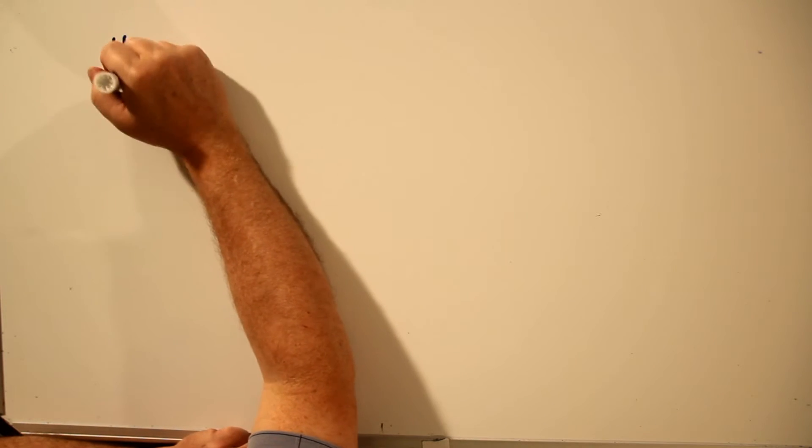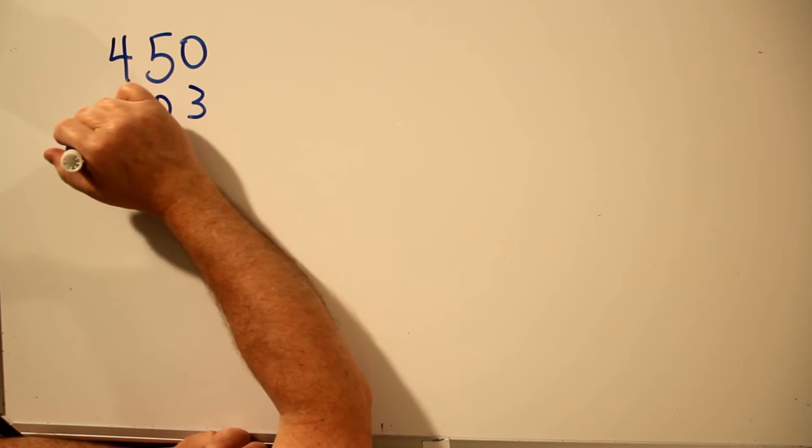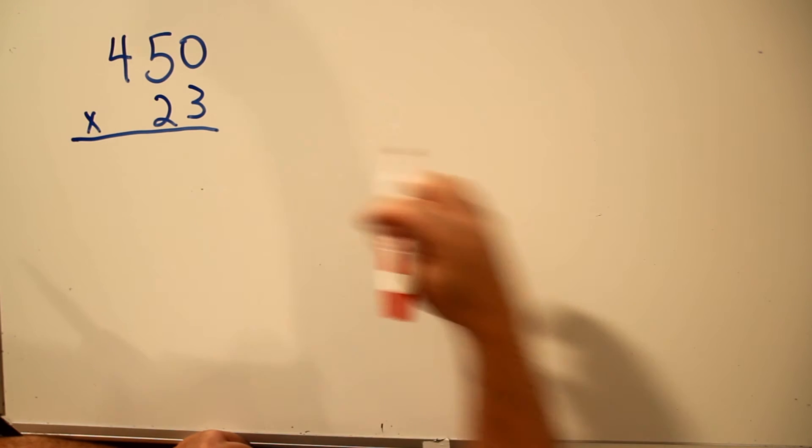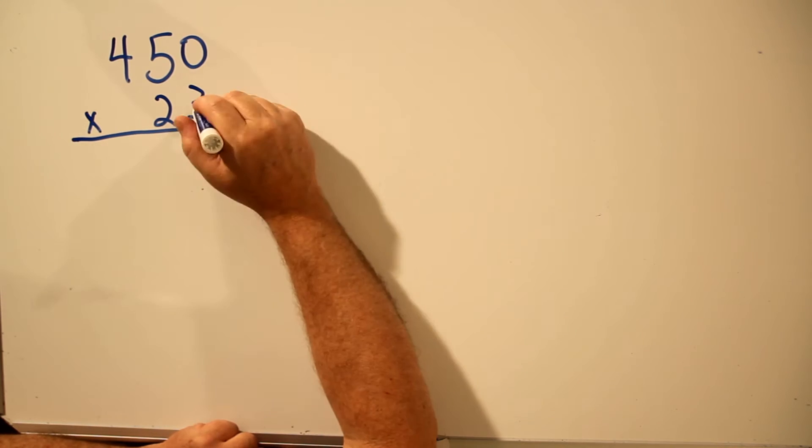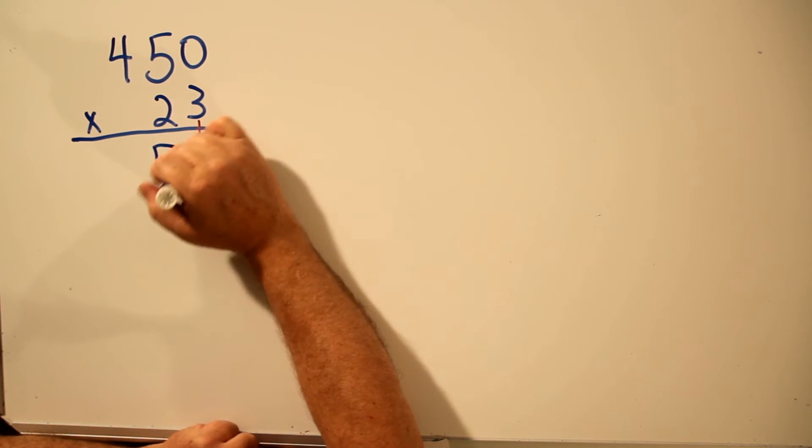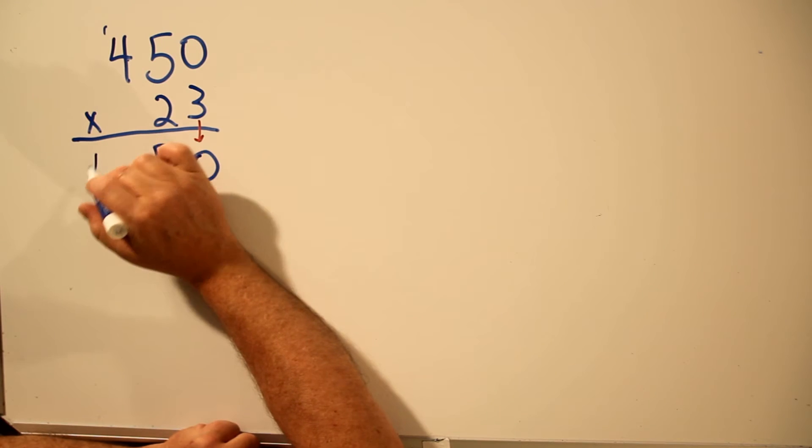And just so there's no confusion, if there was a zero in the top number, like 450 times 23, we can't use the shortcut. In this case, we'll start with the 3 and we'll have to multiply all the way through and use two rows. 3 times 0 is 0. 3 times 5 is 15. Carry the 1. 3 times 4 is 12. Plus 1 is 13.